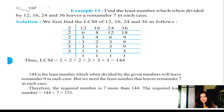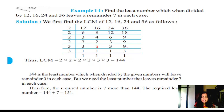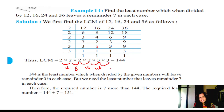Continuing the division: keep dividing by 2 until no more are divisible, then divide by 3. After all divisions by 2, we divide by 3 twice. Then we get the LCM: 2×2×2×2×3×3 = 16×9 = 144. So 144 is the Least Common Multiple of 12, 16, 24, and 36.